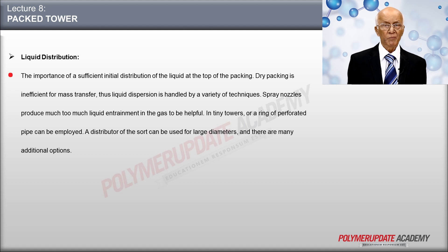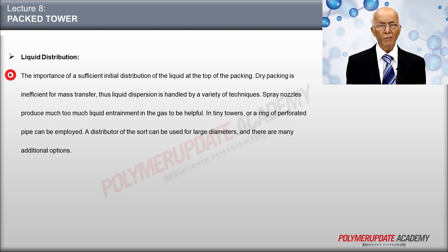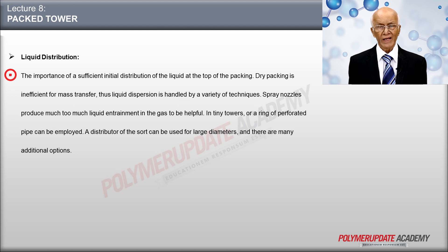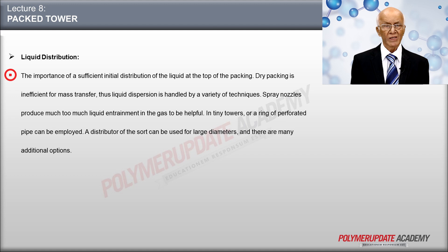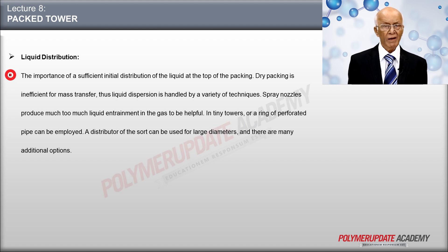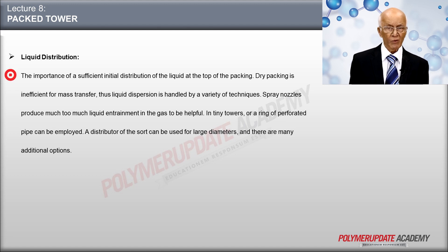Regarding liquid distribution: adequate initial distribution of liquid at the top of the packing is critically important. Dry packing is completely ineffective for mass transfer, so various devices are used for liquid distribution. Spray nozzles generally result in too much entrainment of liquid in the gas to be useful. A ring of perforated pipe can be used in small towers, while for large diameter towers, distributors of various types can be used, and many other arrangements are available.